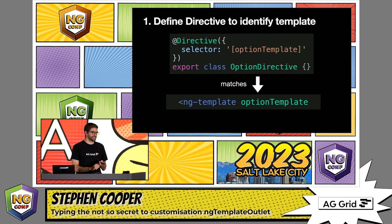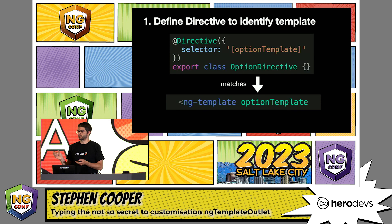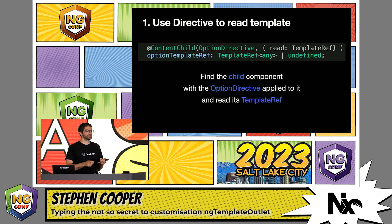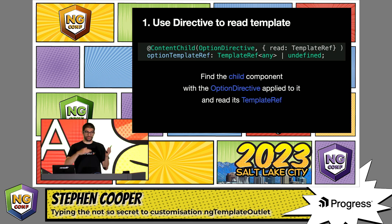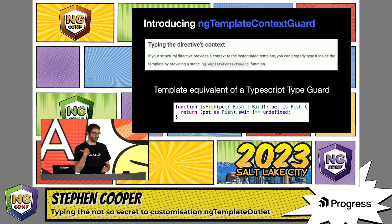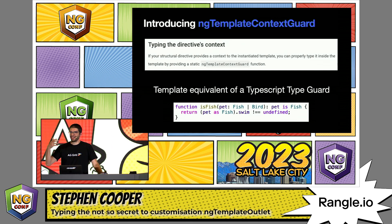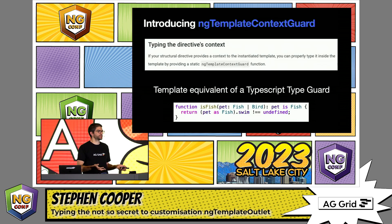So the first step, we're going to define a directive to identify our templates. This is basically all you need to do for your directive: you give it a selector, which is going to be the option template attribute. Then on our ngTemplate, we've basically removed the hash, and this enables us to identify the template via the directive. Our content child gets updated to have the directive as what we're looking for, and we're going to read from that the template reference. So: find the child component that has an option directive on it, and then read the template reference.